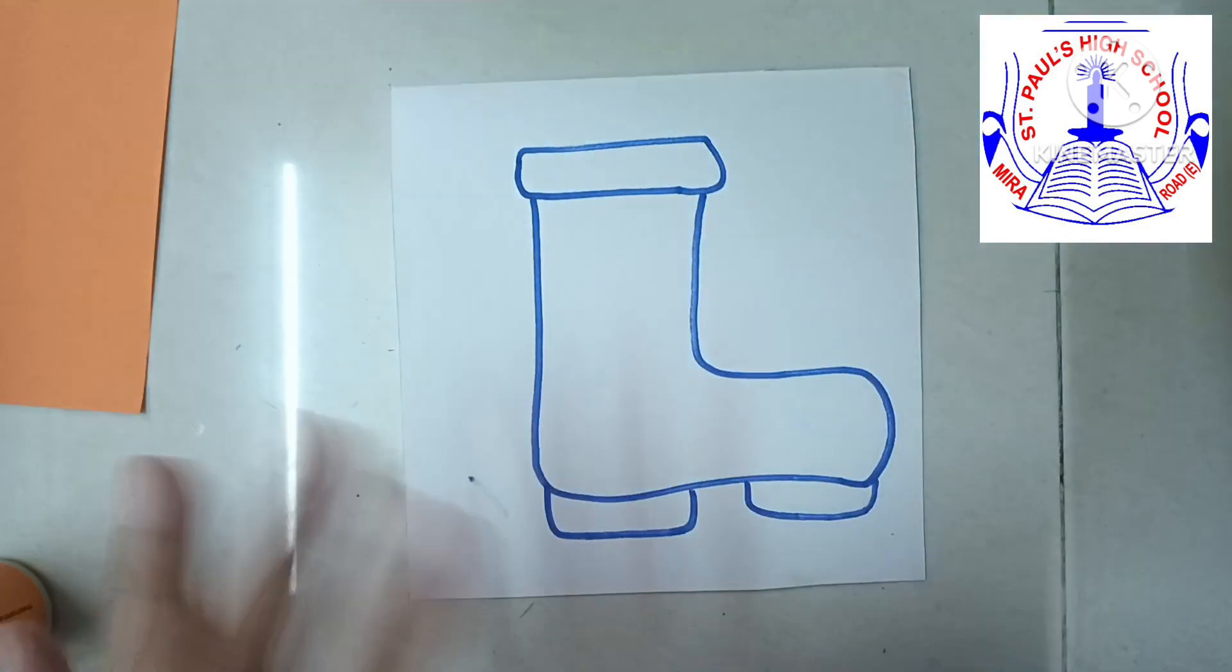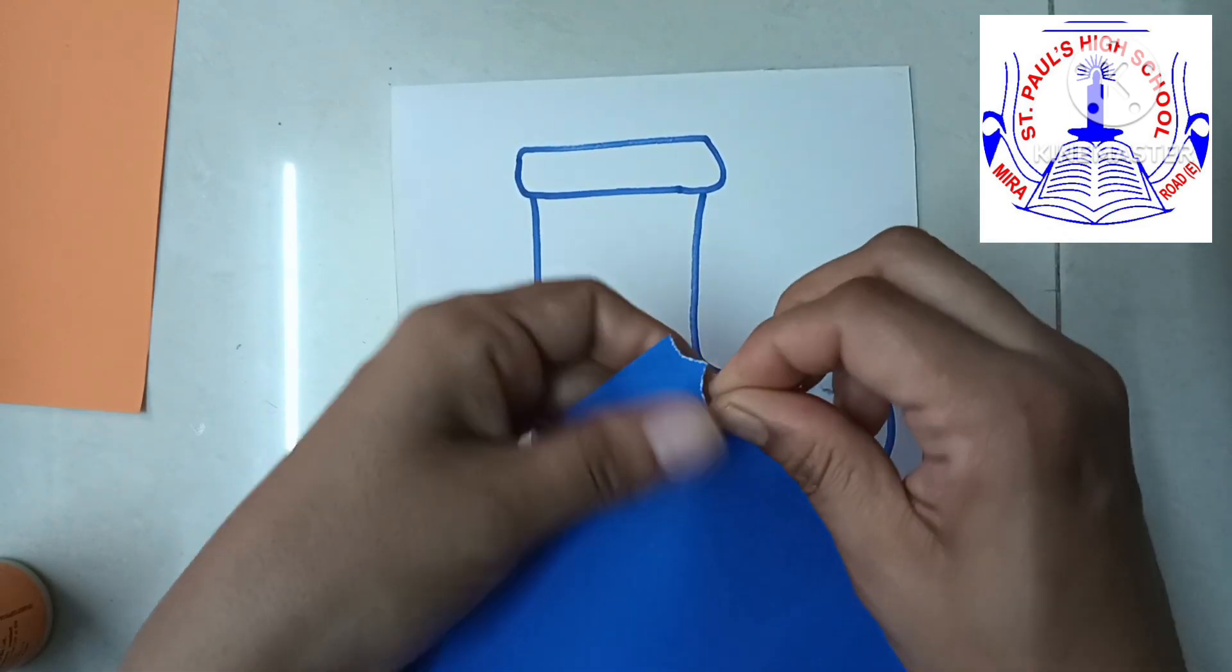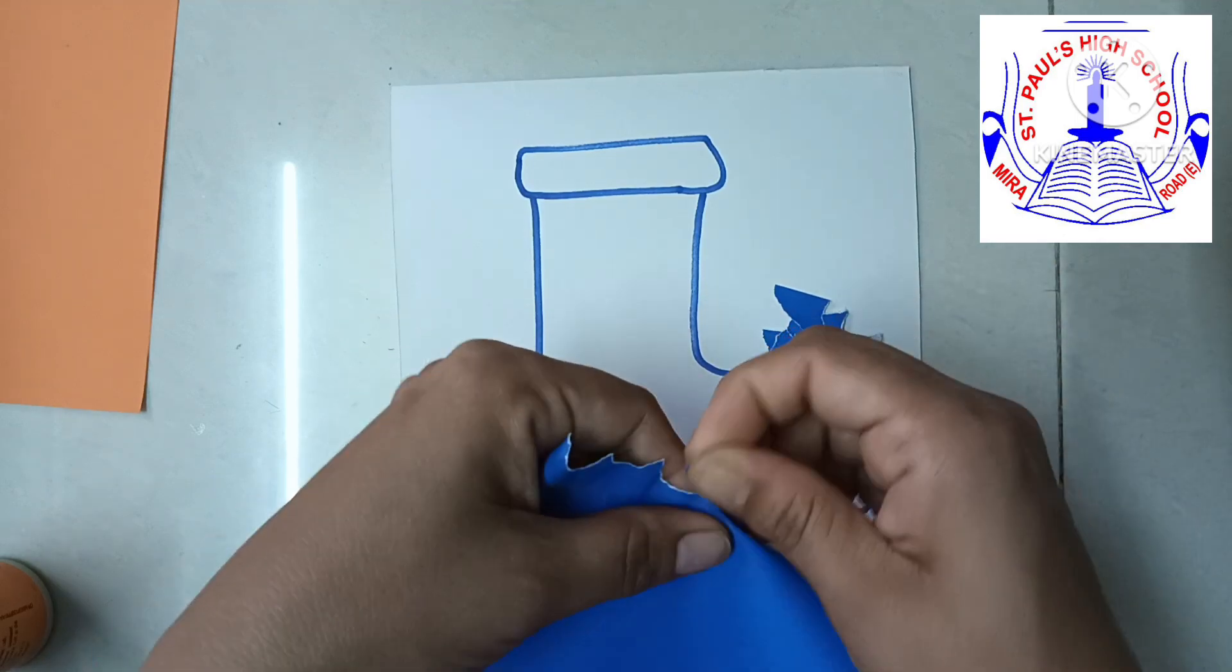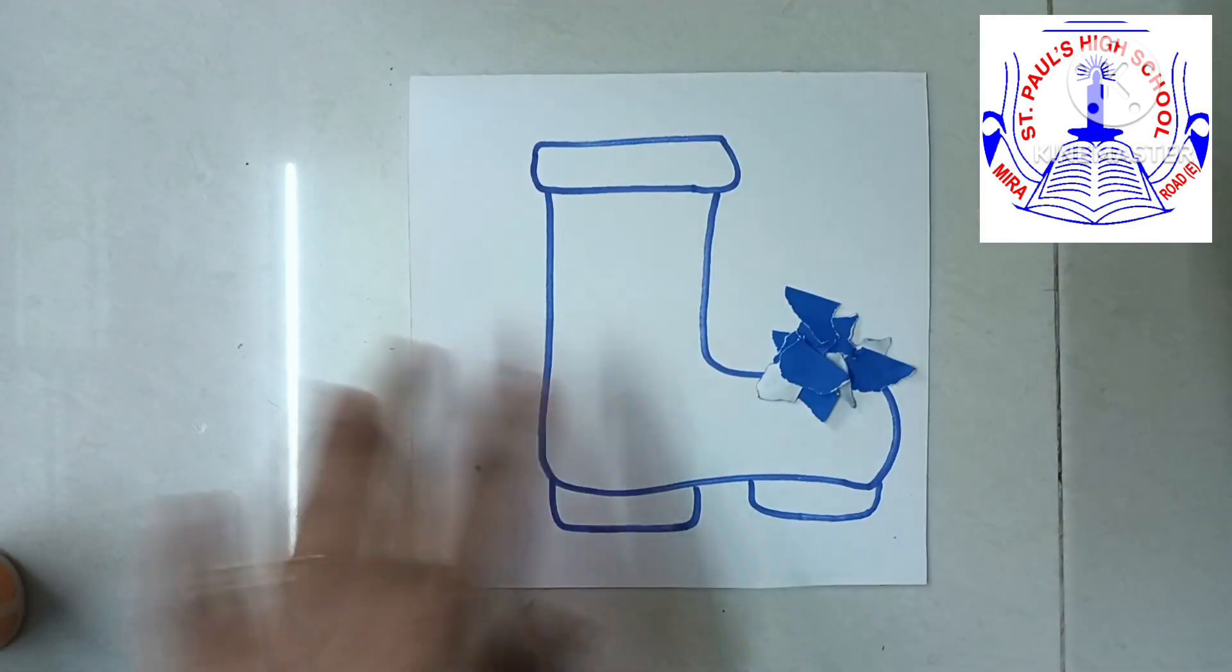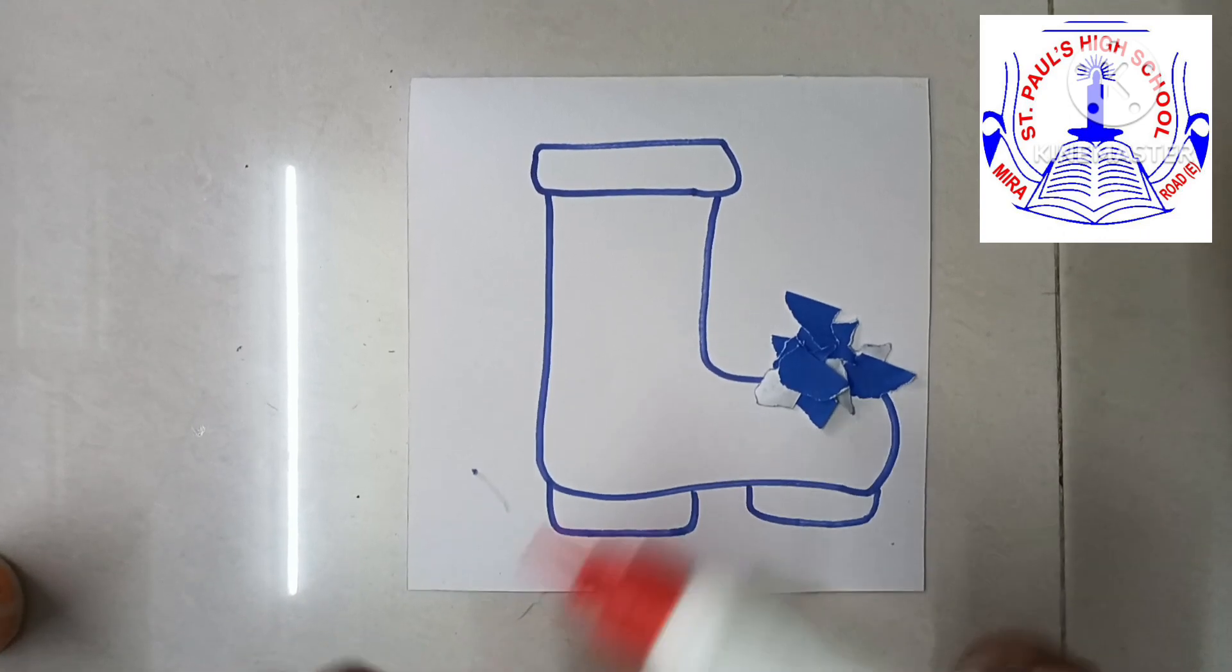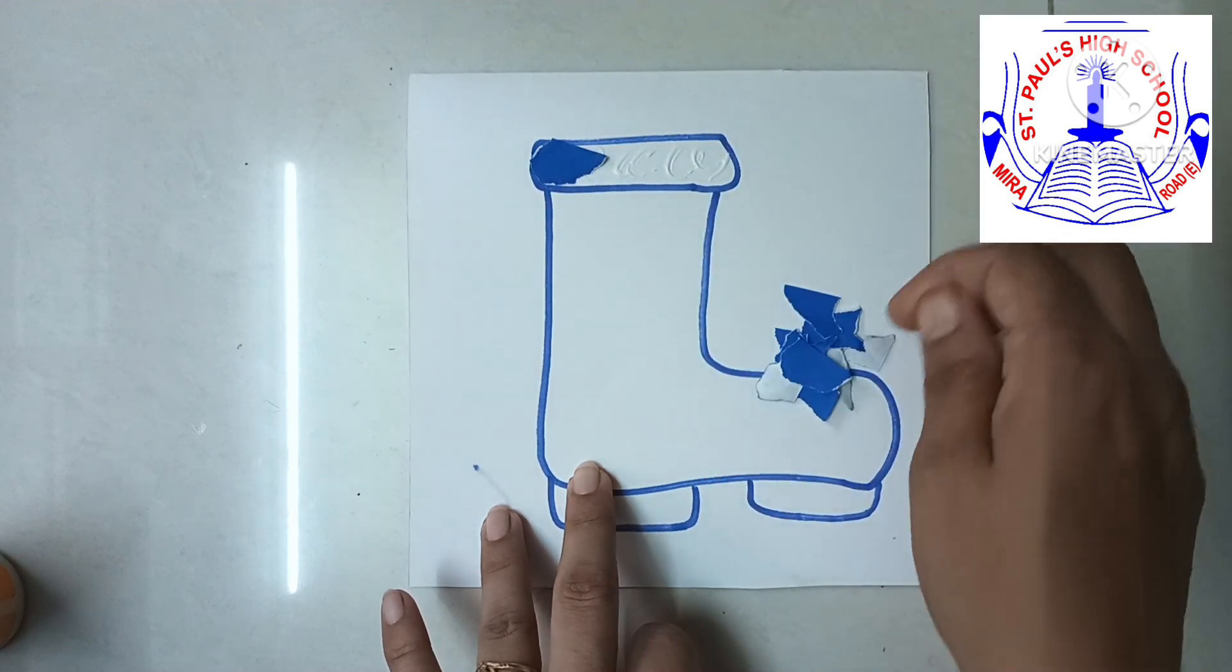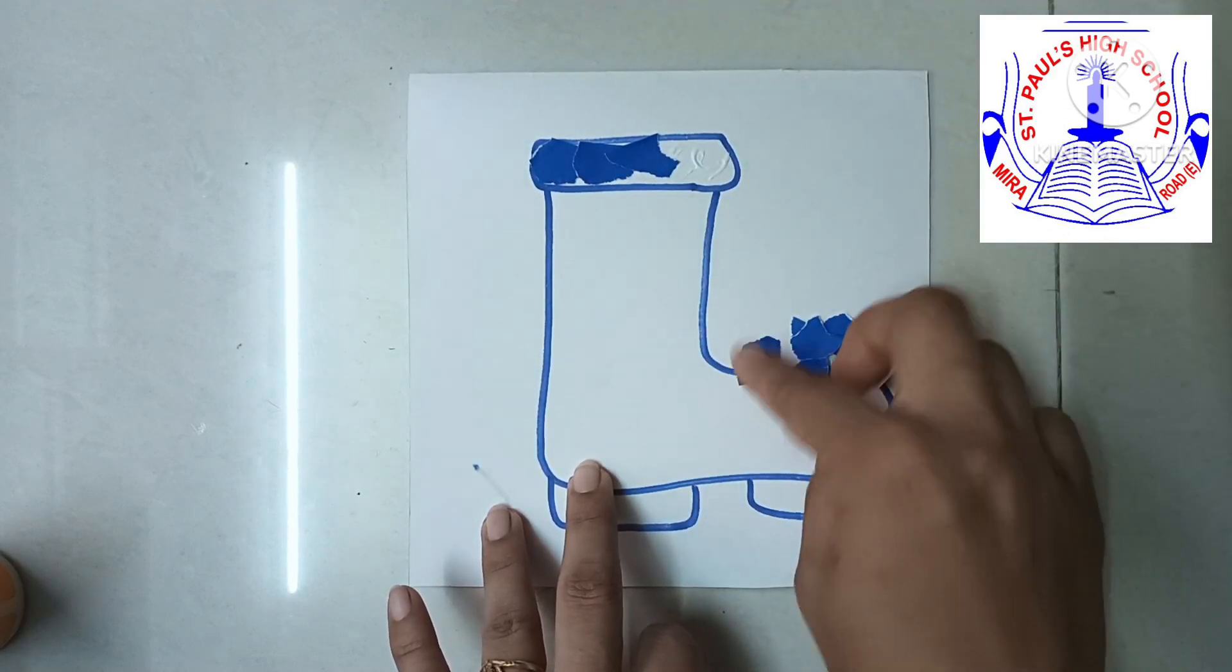After drawing, pieces of paper are to be pasted on it. For this, the paper should be cut by hand. You can take the paper of your choice. Glue should be applied first to stick the paper. Then paste the cut pieces of paper. But don't apply too much glue.